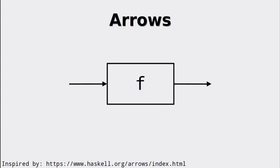Arrows are another structure representing an abstract sense of computation, specifically focusing on composition. In essence, they are a computation parameterized over the input and output. Essentially, arrows are very similar to simple functions, but lifted into their own context.